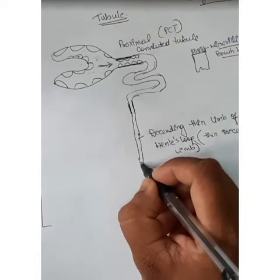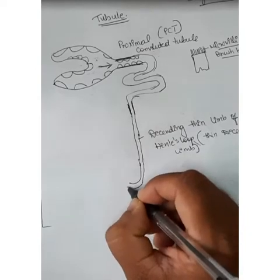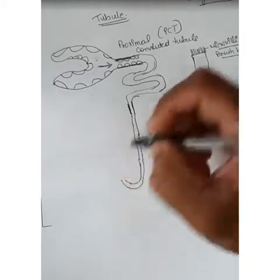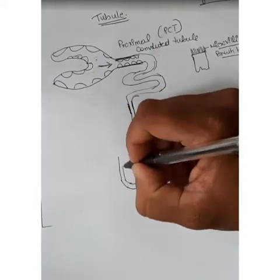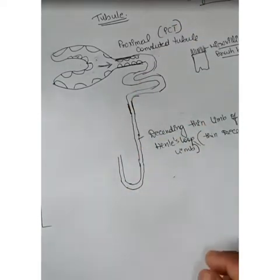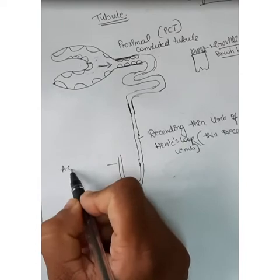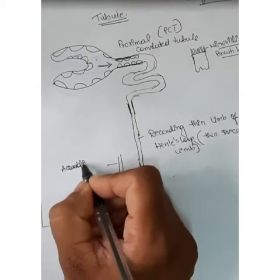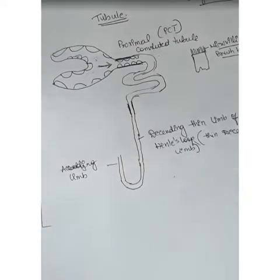The thin descending limb ends at a hairpin loop — it takes a hairpin loop-like structure. Then the tubule ascends upward, going parallel to the descending limb. This is referred to as the ascending limb.